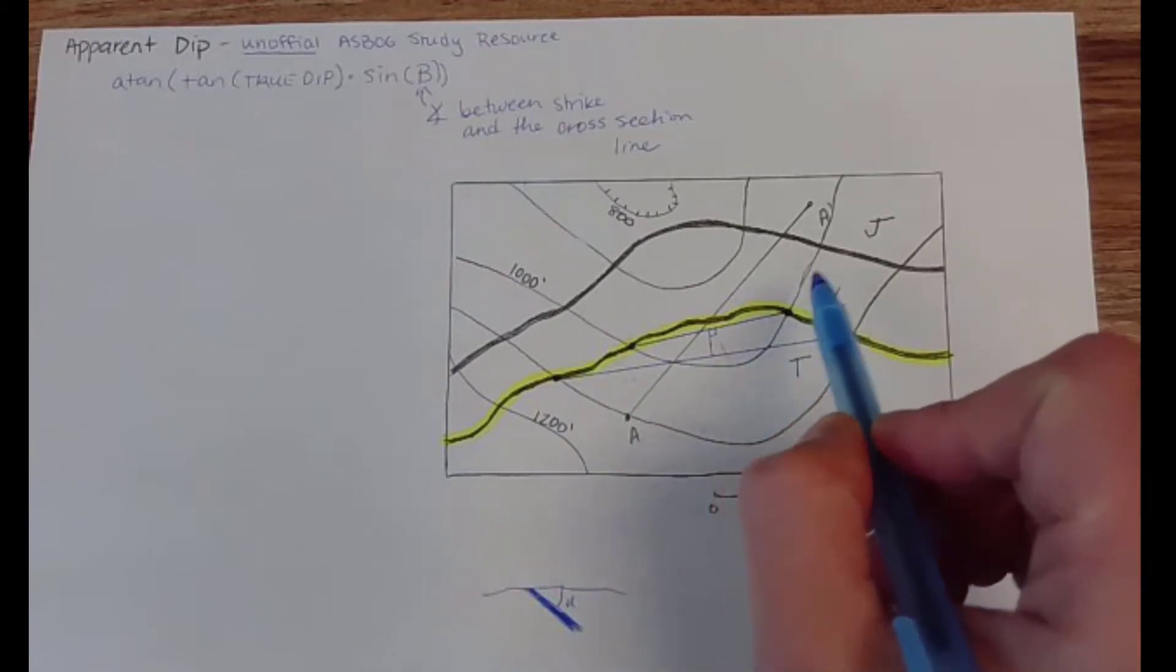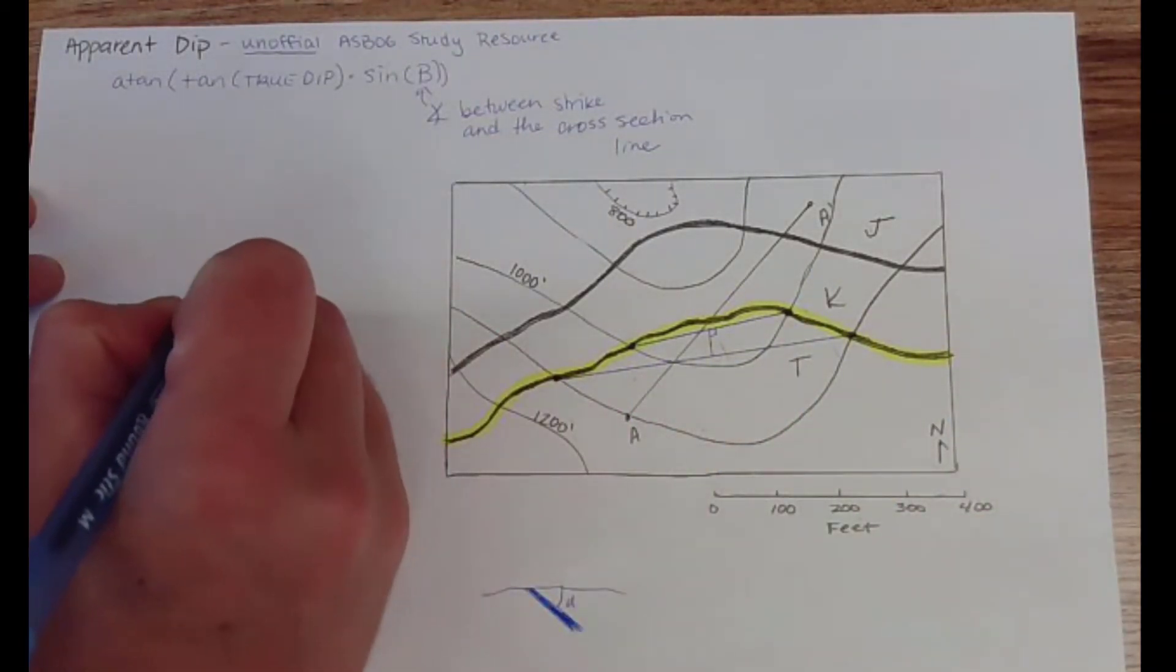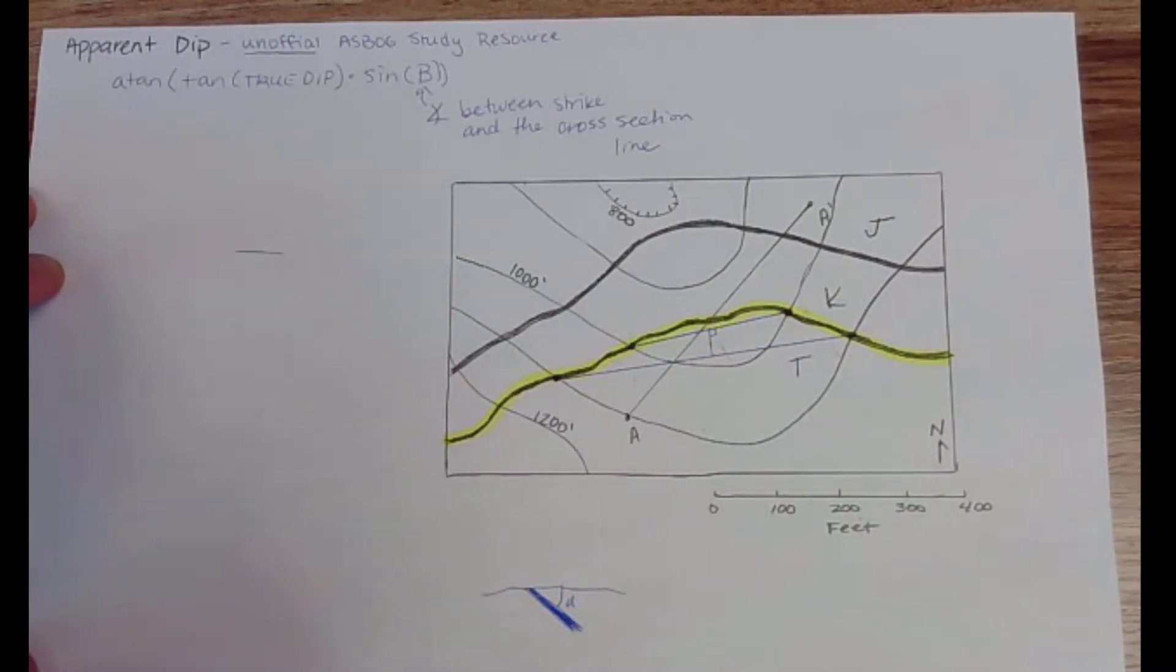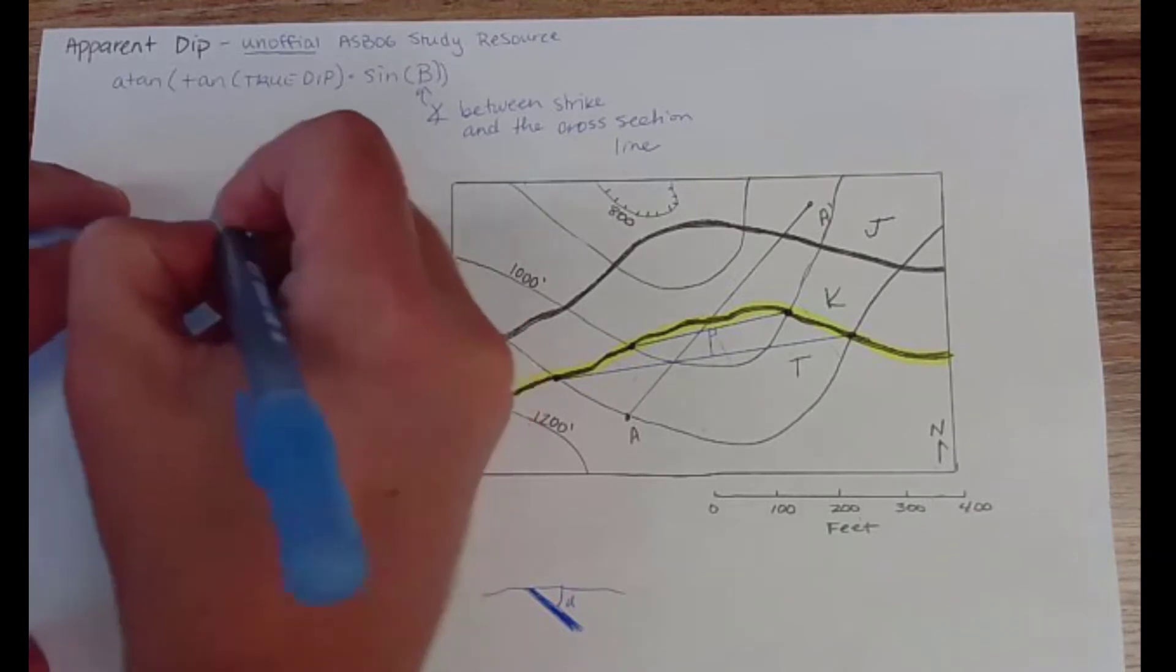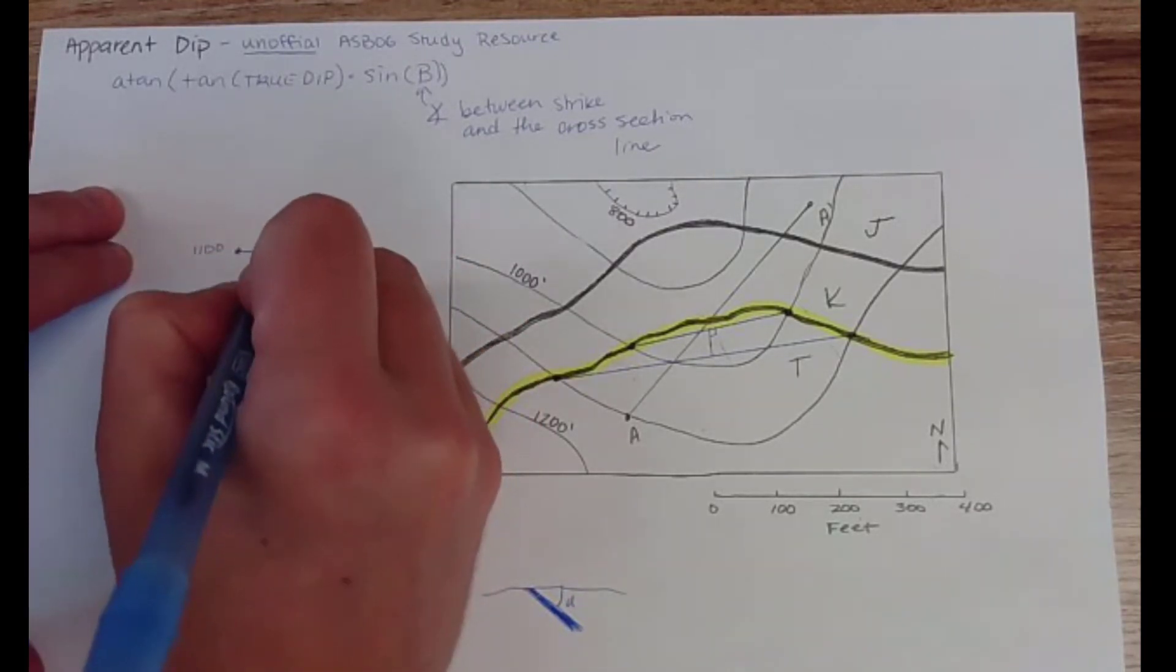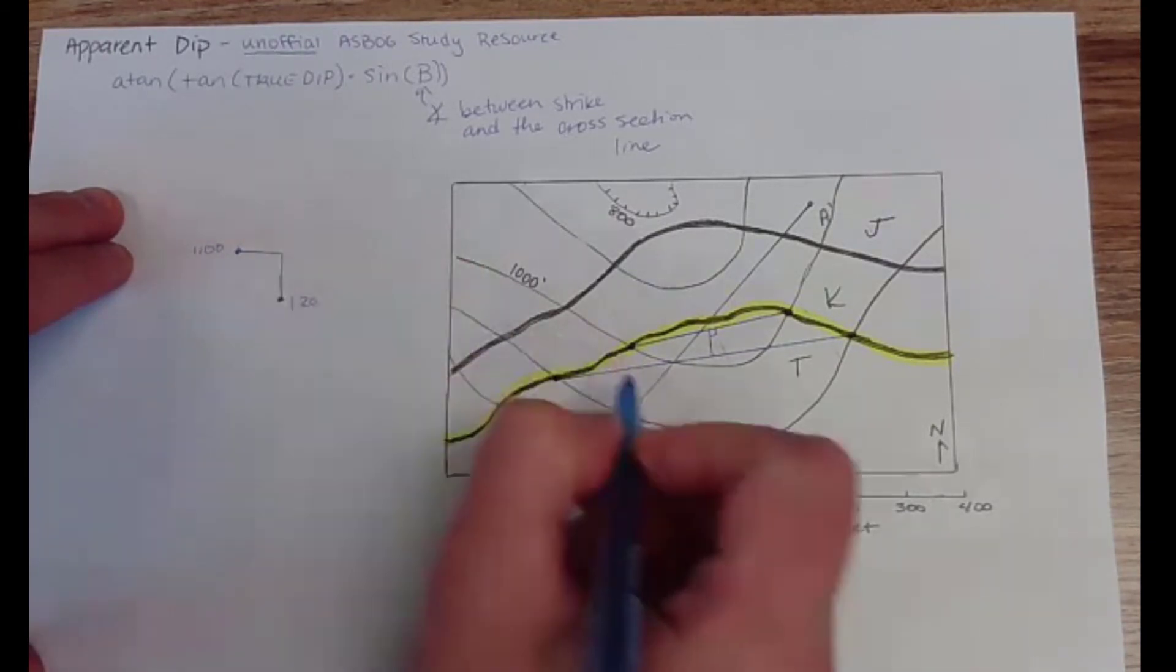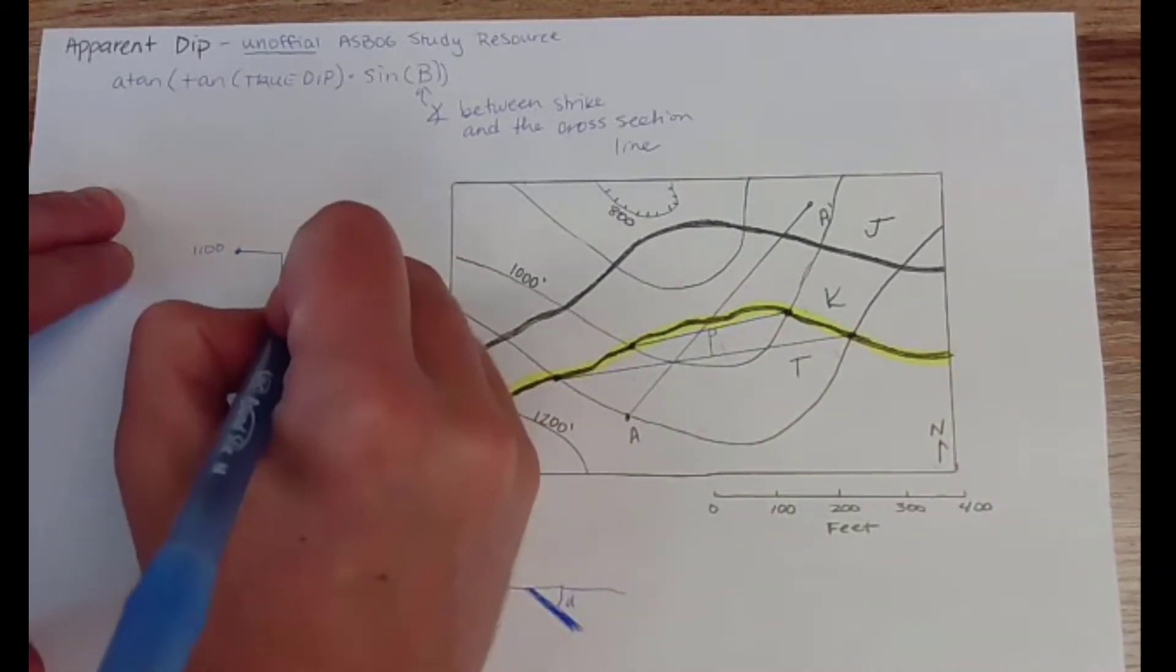So just to visualize this I would be walking some horizontal distance but I would be going from 1100 feet in elevation to 1000 feet in elevation. So that means that I would be dropping 100 feet as I walk some horizontal distance.